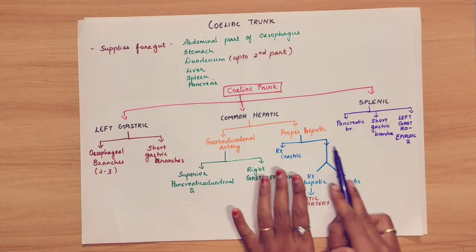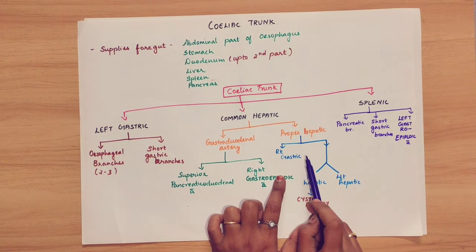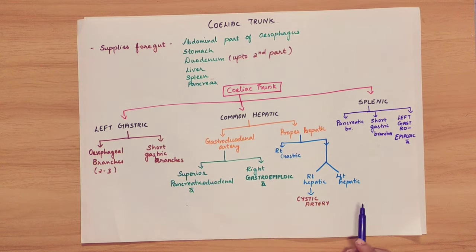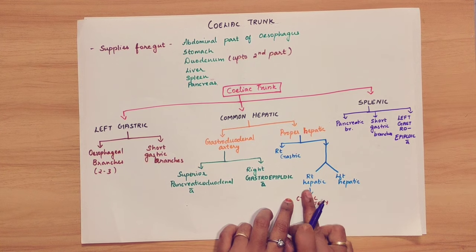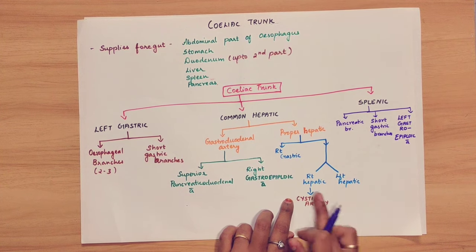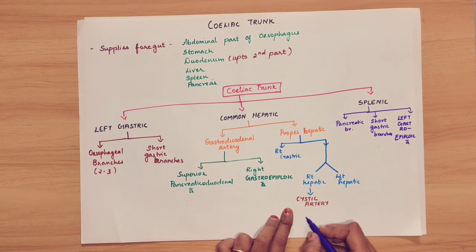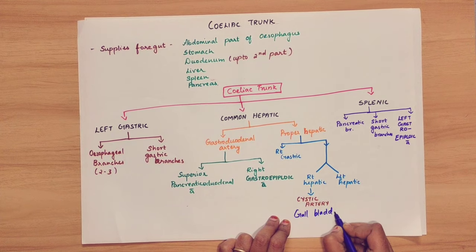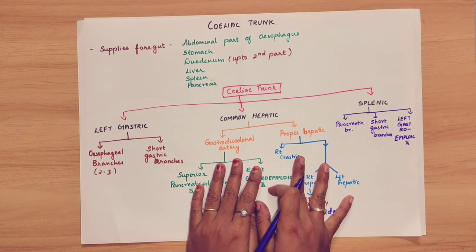Coming to the proper hepatic artery — it is divided further. The liver is divided into two lobes: right lobe and left lobe. So the proper hepatic artery gives rise to the right hepatic artery and left hepatic artery. In the right hepatic artery, there is one branch called the cystic artery, which supplies the gallbladder. This is all about the common hepatic artery.